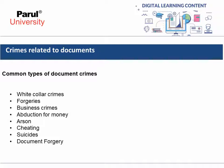Typical white collar crimes could include wage theft, fraud, bribery, Ponzi schemes, insider trading, labor racketeering, embezzlement, cyber crime, copyright infringement, money laundering, identity theft, and forgery. This white collar crime overlaps with corporate crime.